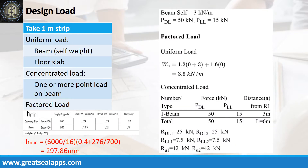The beam carries a concentrated dead load of 50 kN and concentrated live load of 15 kN at mid-span, for a factored concentrated load of 84 kN. The beam self-weight is 3 kN per meter, for a factored uniform load of 3.6 kN per meter.